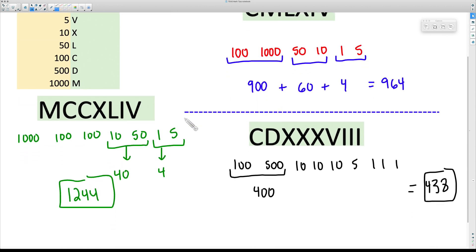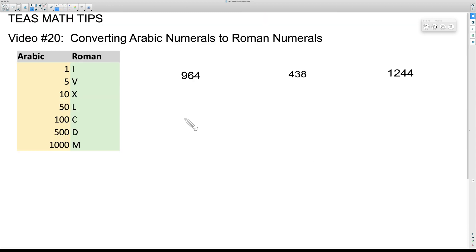We have 964. You want to take each place value and work on each place value individually. For example, here 900, don't worry about the 60, don't worry about the 4. 900, well one thing you might consider doing is taking the D which is 500 and then taking four C's.